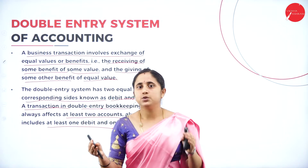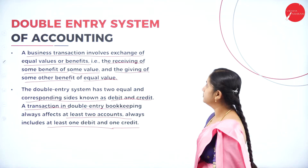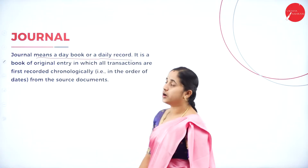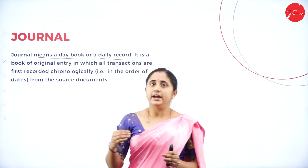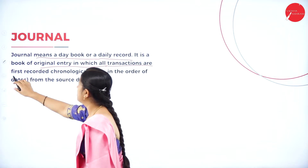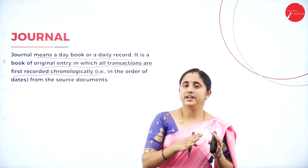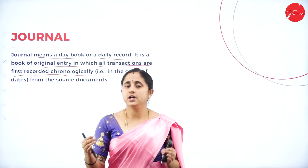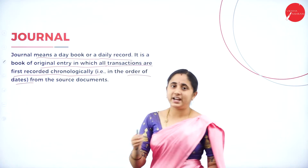In simple terms, double entry system of bookkeeping is recording both entries of accounts — how it affects debit and credit. Journal, also called a day book or daily record, is a book which records daily transactions. It is the first book — the original entry book — in which all transactions are first recorded chronologically. The journal book is the original book where all business transactions are first recorded in date order.